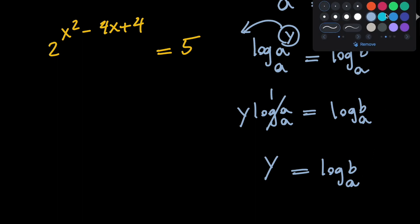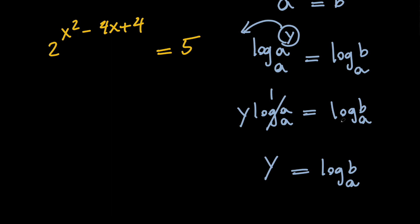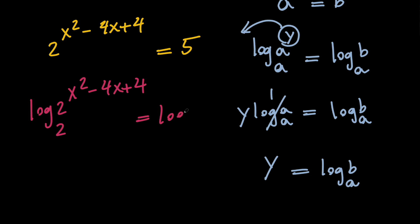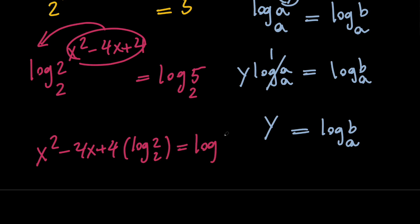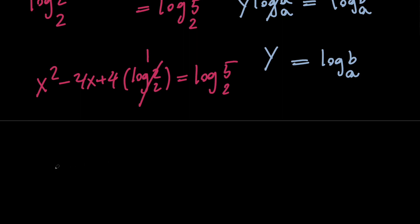So let's go ahead and use this process for our equation. We need to take the log of both sides with base 2. We're going to have log base 2 of 2 to the power of x squared minus 4x plus 4 equals log base 2 of 5. Let's take the power and bring it in front: x squared minus 4x plus 4 times log base 2 of 2 equals log base 2 of 5. Notice that log base 2 of 2 is 1, so we end up with x squared minus 4x plus 4 equals log base 2 of 5.